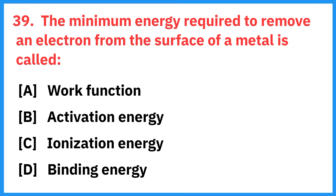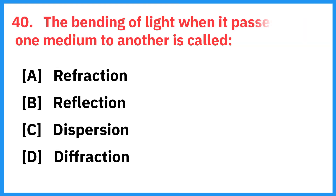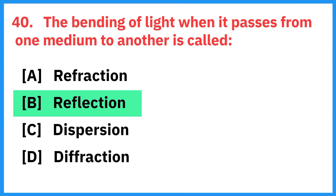The minimum energy required to remove an electron from the surface of a metal is called? Right answer is work function. The bending of light when it passes from one medium to another is called? Right answer is reflection.